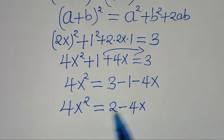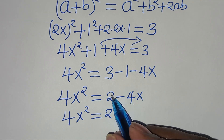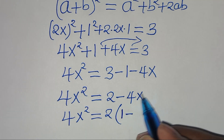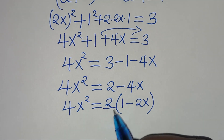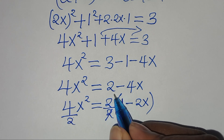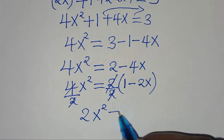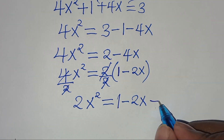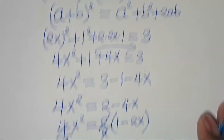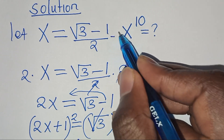The next step is to factor out 2 on the right hand side, so that we have 4x squared equal to 2 times (1 minus 2x). Then we divide both sides by 2, so that we have 2x squared equal to 1 minus 2x. Let's call this equation 2. And equation 1 is x equal to square root of 3 minus 1 divided by 2.